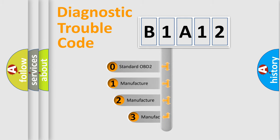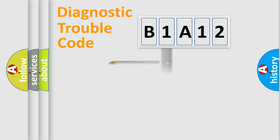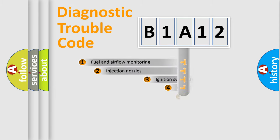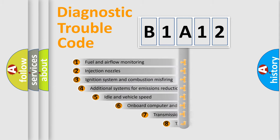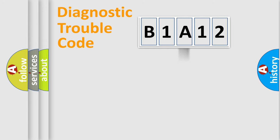If the second character is expressed as zero, it is a standardized error. In the case of numbers 1, 2, or 3, it is a more specific expression of a car-specific error. The third character specifies a subset of errors. The distribution shown is valid only for the standardized DTC code.